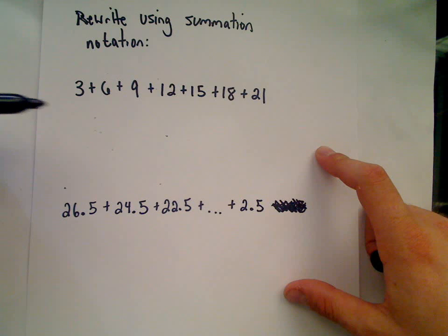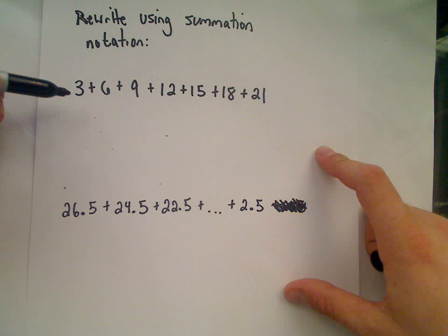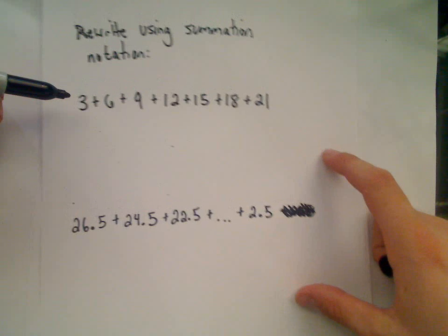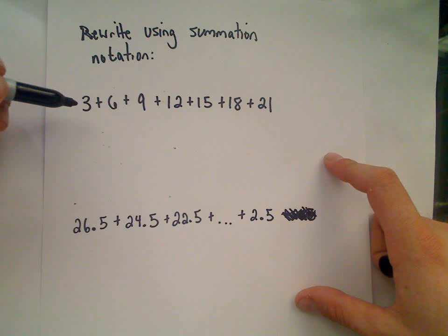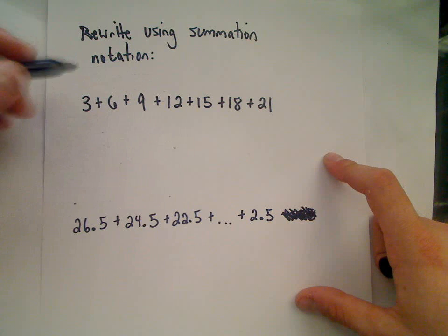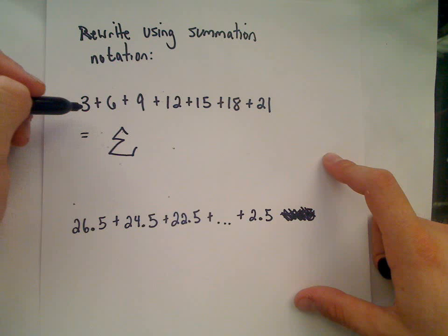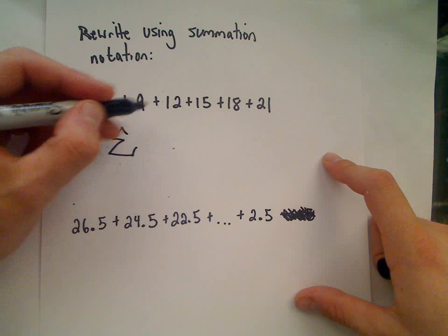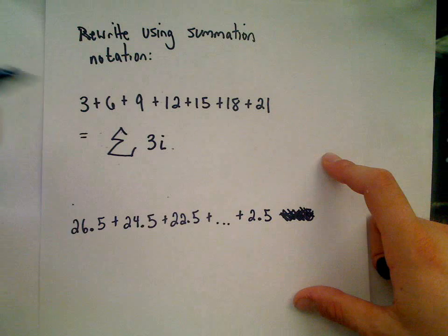So now let's do a couple backwards - rewrite using summation notation. In this case, rewriting something in summation notation is just a lot of pattern spotting. It can be pretty tricky depending on how complicated the formula is. In this case it's not too crazy yet. So I'm adding 3 plus 6 plus 9 plus 12 plus 15 plus 18 plus 21. I recognize that we are adding up multiples of 3 - 3 times 1, 3 times 2, 3 times 3, 3 times 4. So generically, I'm going to have multiples of 3, and I can write that as 3 times i.